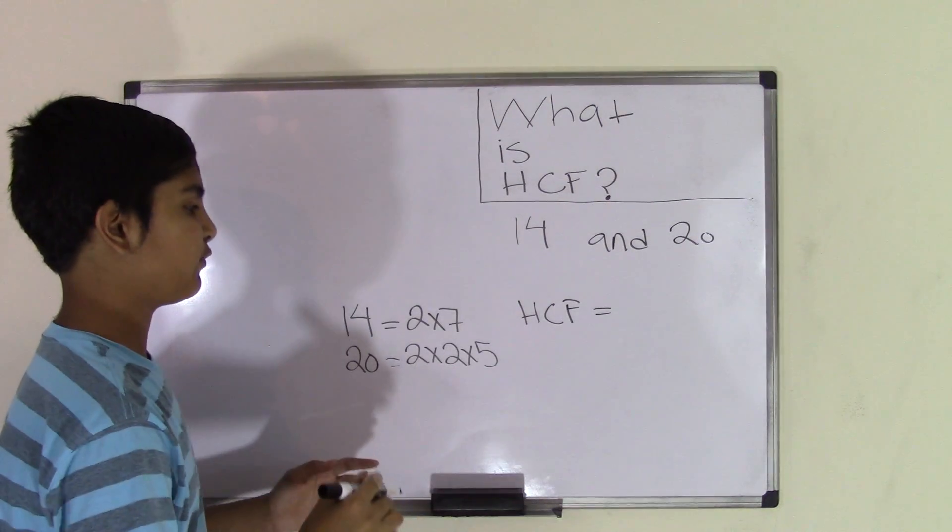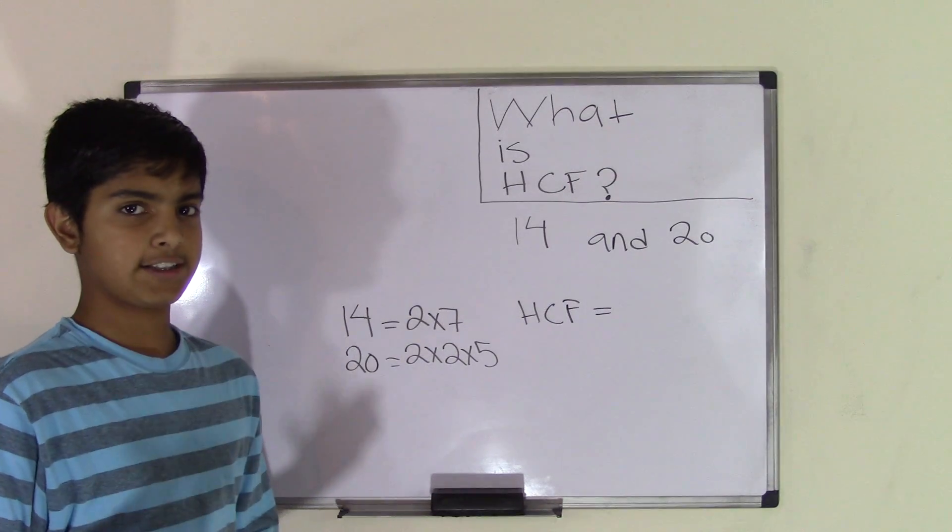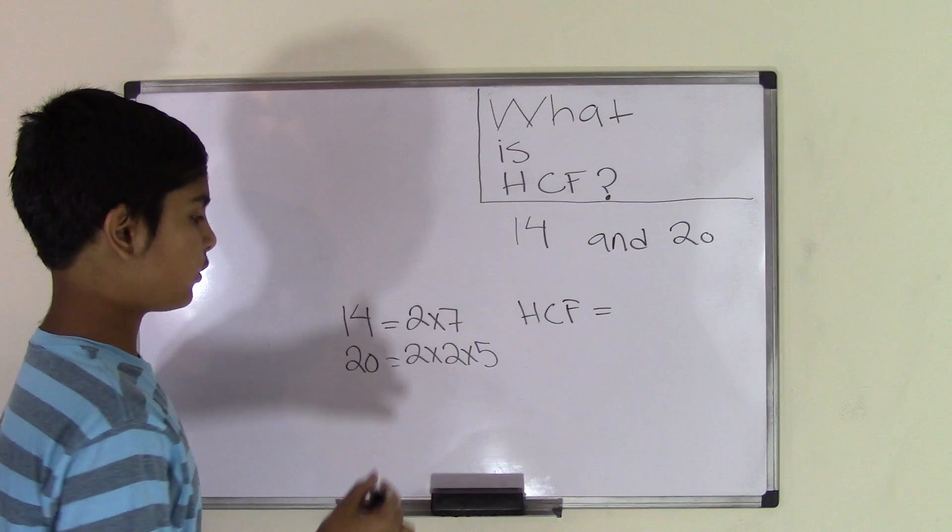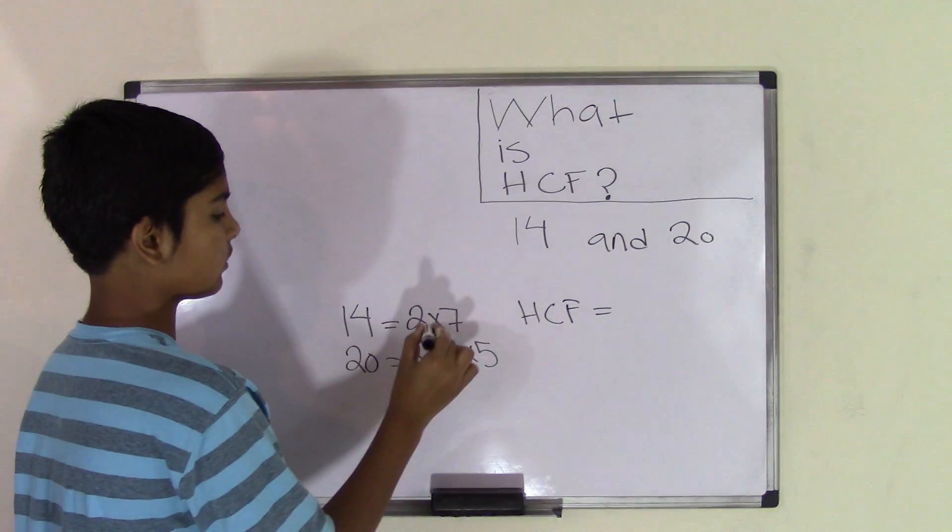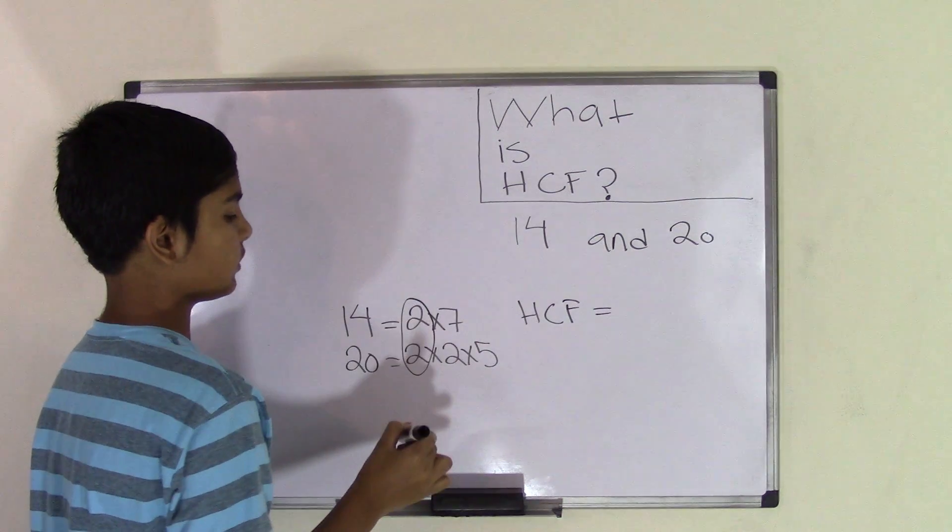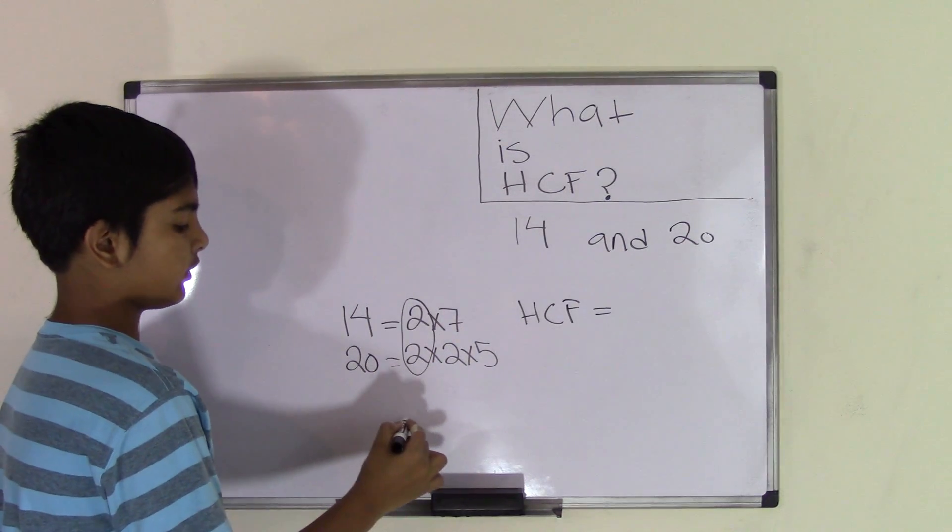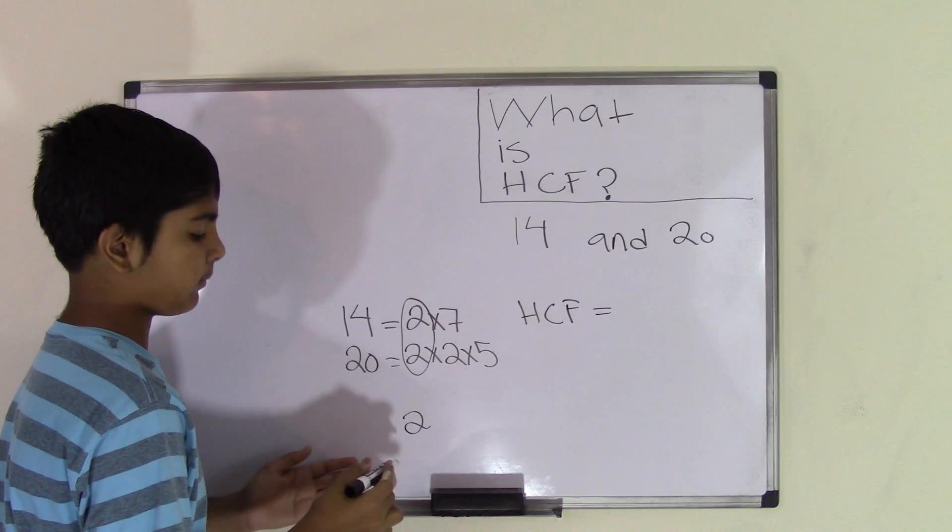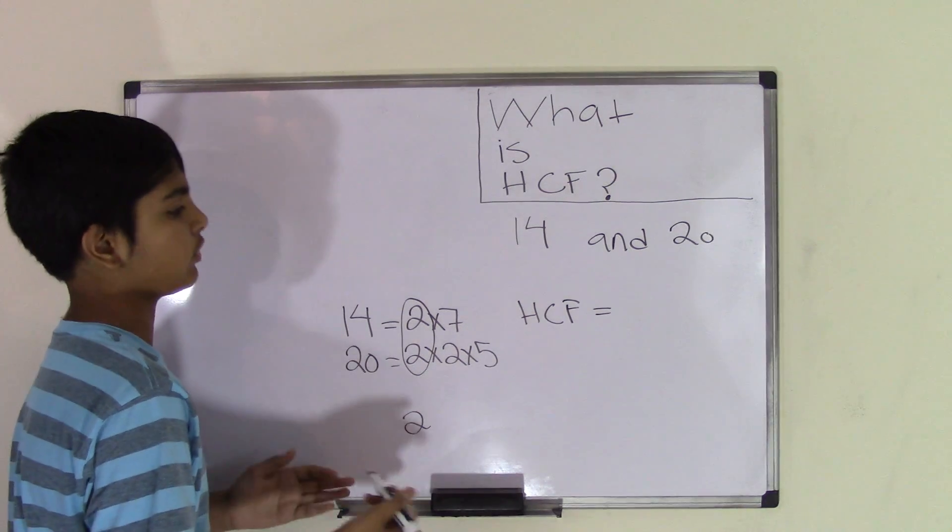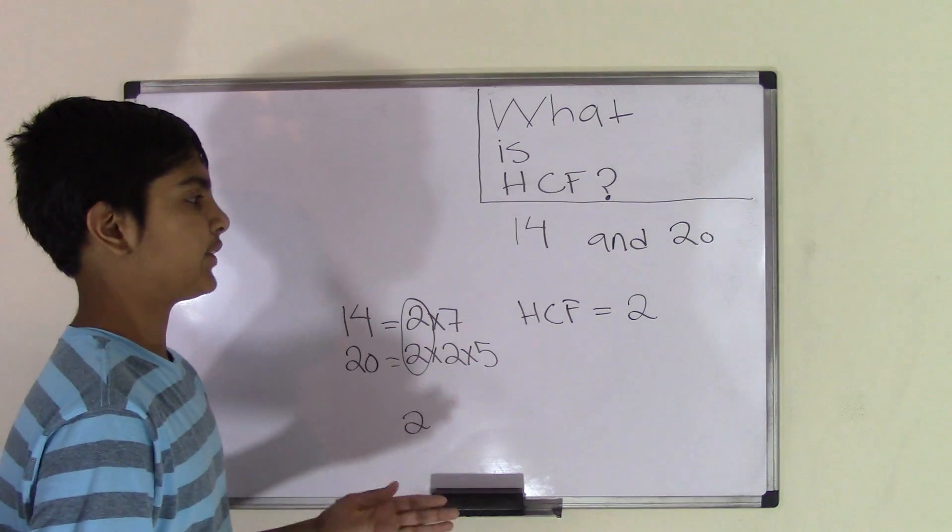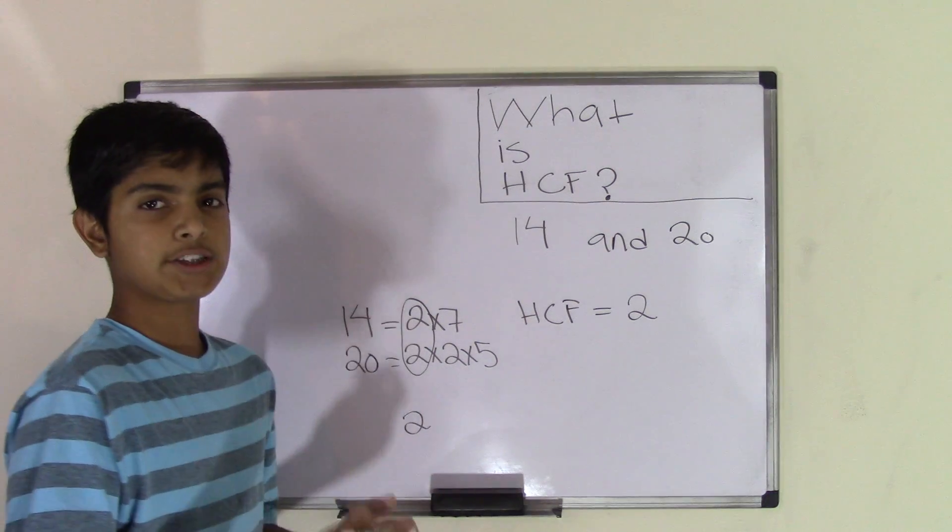Now to find the HCF, we first need to find all the common factors, because again, highest common factor. So we'll go ahead and circle the common factors. The number 2 and 2 match. There are no other common factors, so the only common factor is the number 2, and it is going to be our HCF. The HCF for the numbers 14 and 20 is the number 2.